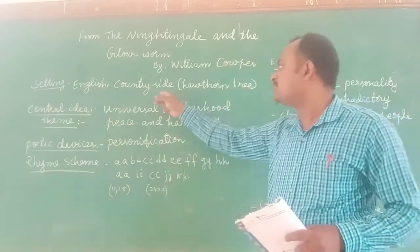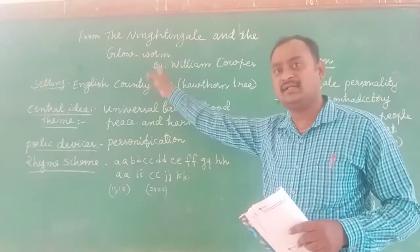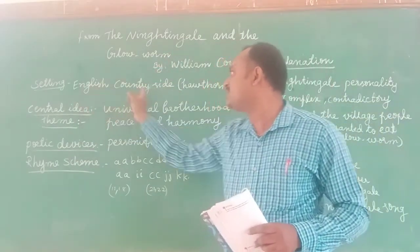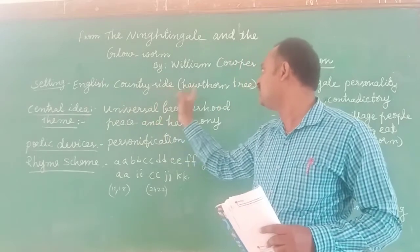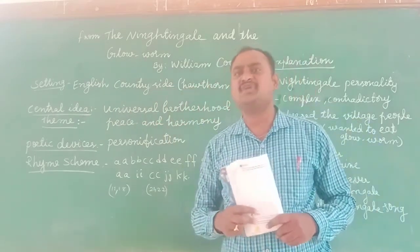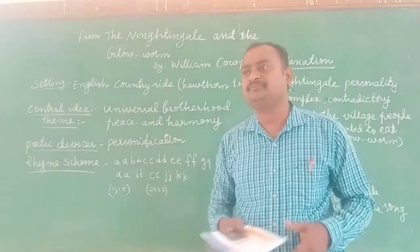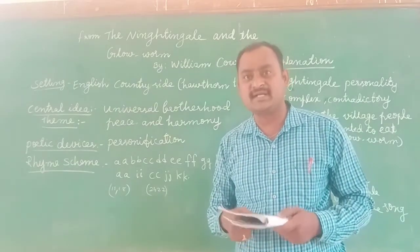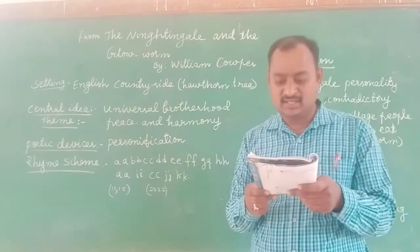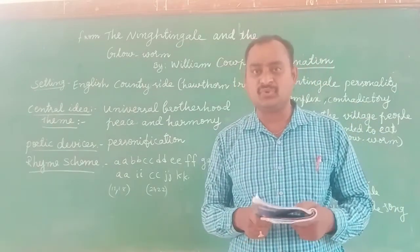Here also, in this poem, 'The Nightingale and the Glow-worm', the main setting if you observe is the English countryside. It is the hawthorn. Hawthorn is an indigenous plant that we will observe in the English countryside. It is having white and red colour flowers and also small dark berry-like fruits.